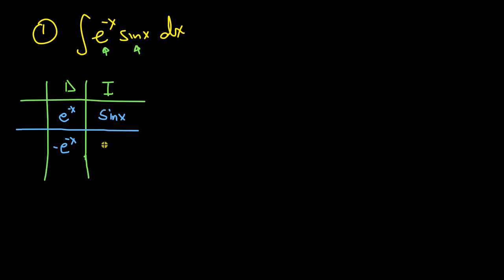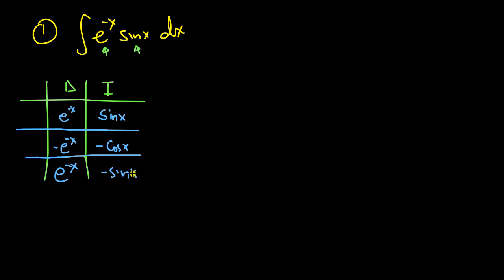On the integrate side, I'll put sin(x). Integrating sin(x) gives -cos(x). Proceeding to the next row: differentiating -e^(-x) gives e^(-x), and integrating -cos(x) gives -sin(x). Now, this is very important — close attention here. I'll write the signs: plus, minus, plus, as usual.